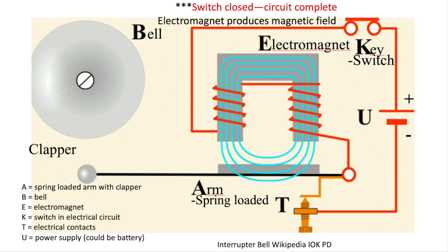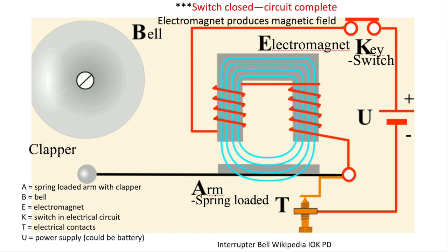We've got the instant where the magnetic field is produced from the bottom of the electromagnet going into the spring-loaded clapper arm, and that clapper arm then moves upwards, attracted by magnetic field, and you're going to get your ding on the bell. And look, you've broken the contact.